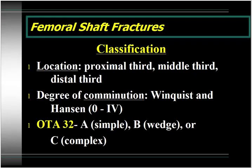We classify femoral shaft fractures based on their location — proximal third, middle third, or distal third — as well as the degree of comminution using the Winquist classification scheme. In the OTA system, these are 32 fractures — femur being the third bone, the diaphysis being the second segment.